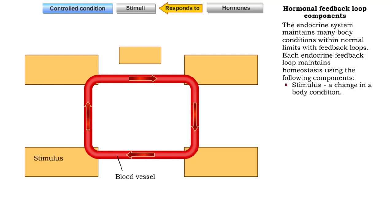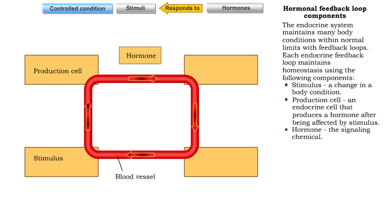Stimulus, a change in a body condition. Production cell, an endocrine cell that produces a hormone after being affected by stimulus. Hormone, the signaling chemical.